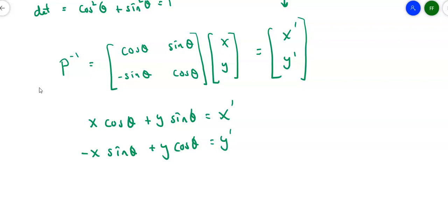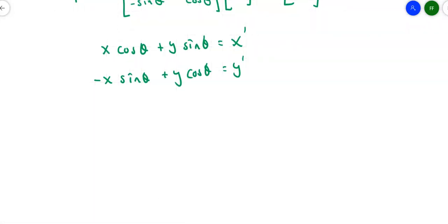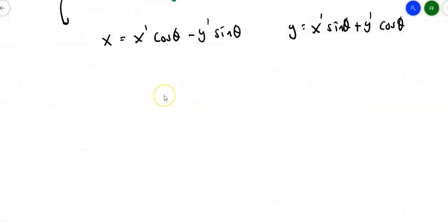I would like to solve for x and for y. Not going through the whole process, but solving for x and y, we come up with x = x' cos θ - y' sin θ, and y = x' sin θ + y' cos θ. Our goal is to take some conic equation that's written in terms of x's and y's and replace those with x primes and y primes.